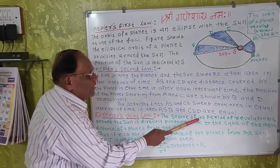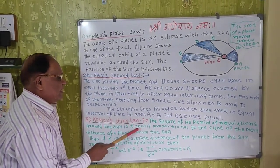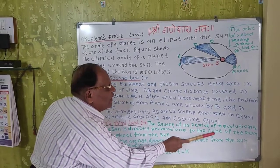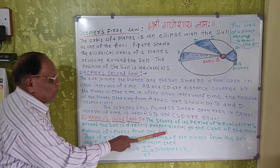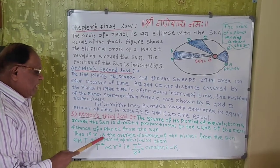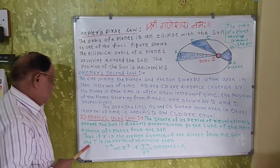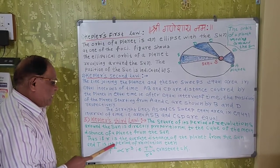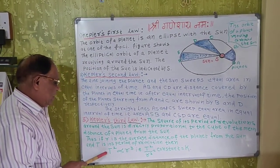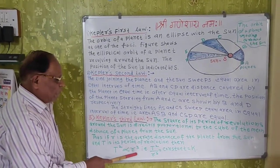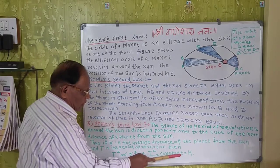The square of the period of revolution around the sun is directly proportional to the cube of the mean distance of a planet from the sun. If R is the average distance of the planet from the sun and T is its period of revolution, then mathematically T² is proportional to R³, that is, T² divided by R³ is equal to constant K.